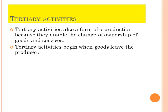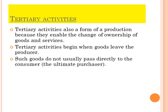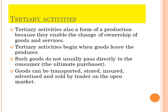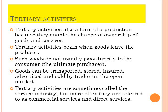Tertiary activities are also a form of production because they enable the change of ownership of goods and services. Tertiary activities begin when goods leave the producer. Goods can be transported, stored, insured, advertised and sold by traders on the open market. All activities that happen from when goods leave the manufacturer until they reach the final consumer come under tertiary activities. They are sometimes called the service industry, but more often referred to as commercial services and direct services.